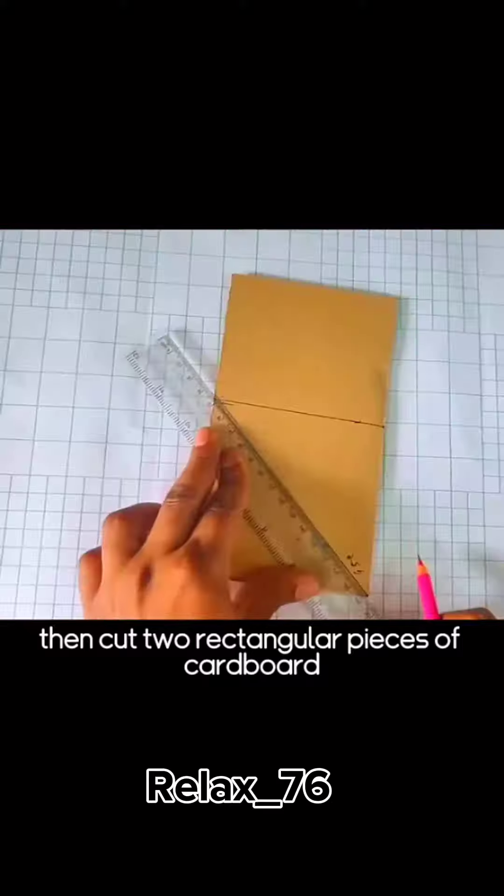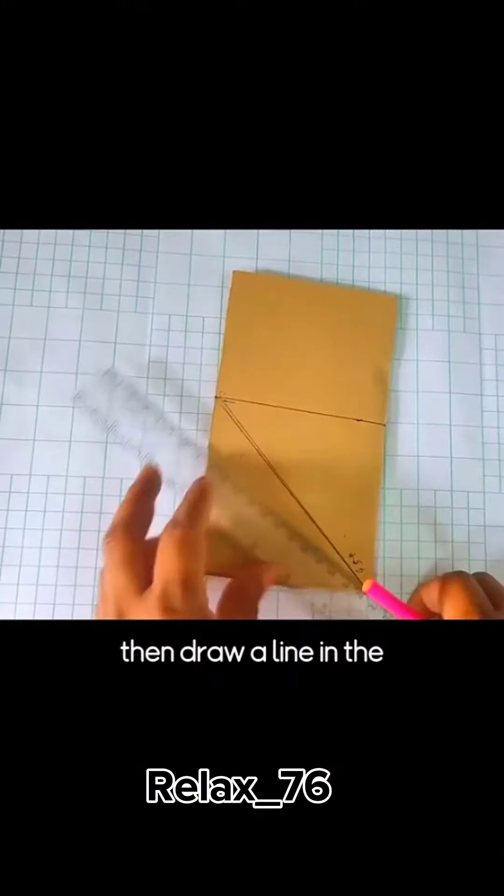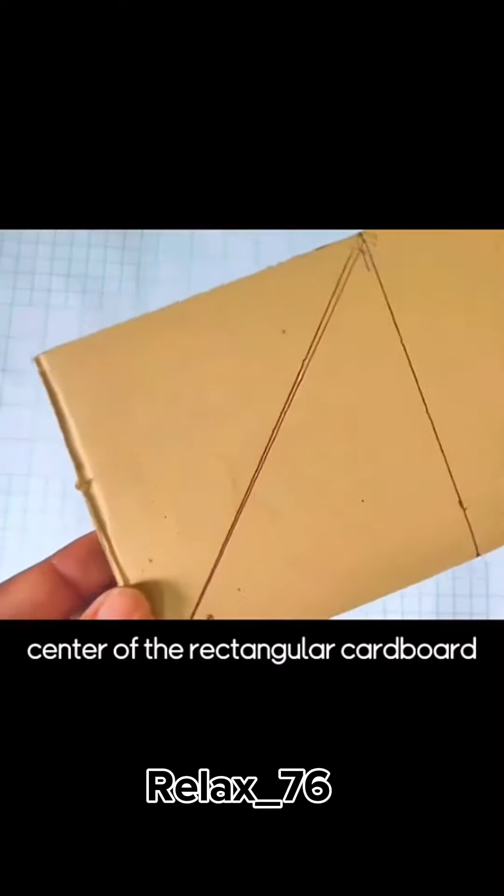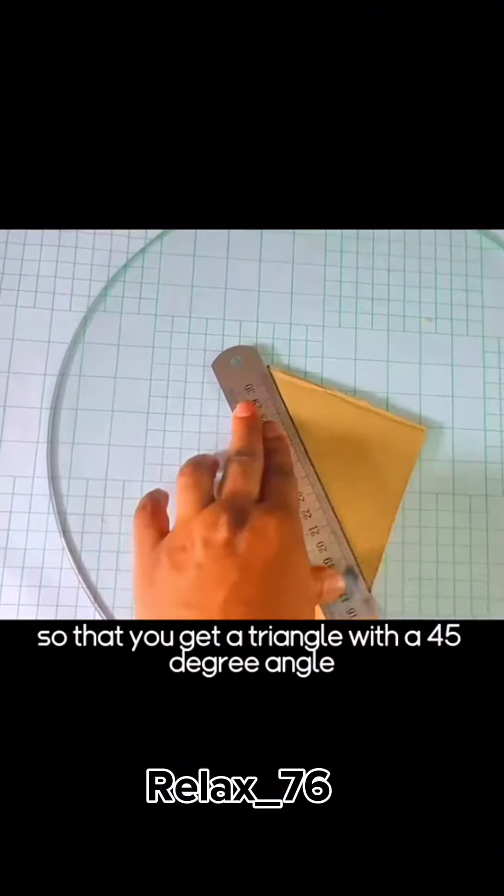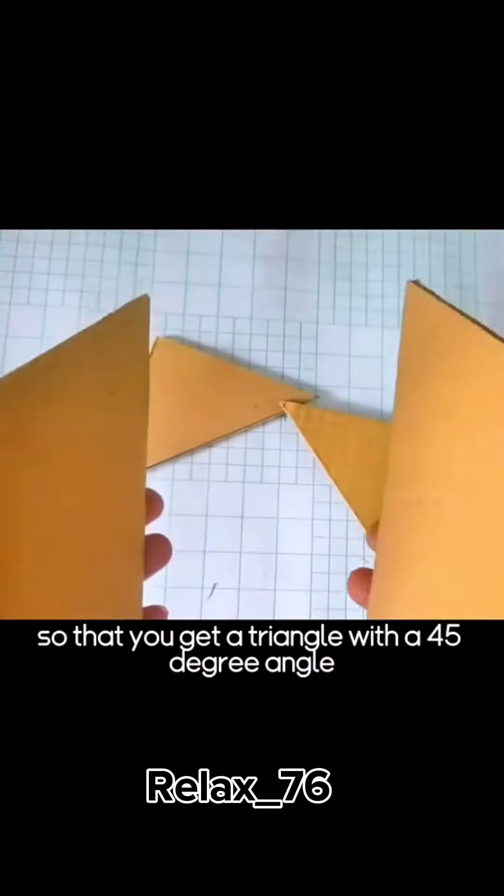Then cut two rectangular pieces of cardboard, then draw a line in the center of the rectangular cardboard, and then draw a line diagonally so that you get a triangle with a 45 degree angle.